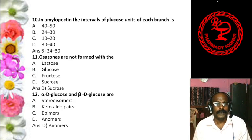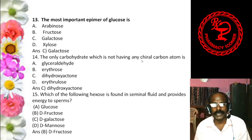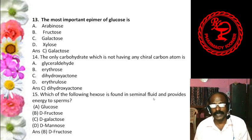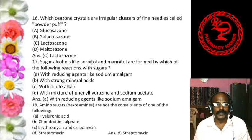Question 1: The general formula of monosaccharide is — options are CnH2nOn, C2nH2On, CnH2O2n, or CnH2nO2n. The answer is CnH2nOn. You can verify this: if N is 6, we get C6H12O6, which is the molecular formula of glucose. So the answer is A.